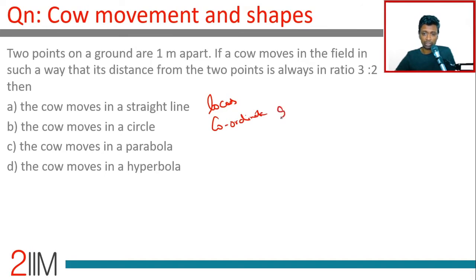So they're one meter apart. Keep origin as one of the two, keep (1,0) so that the one meter apart idea comes in. There is a point (x,y).